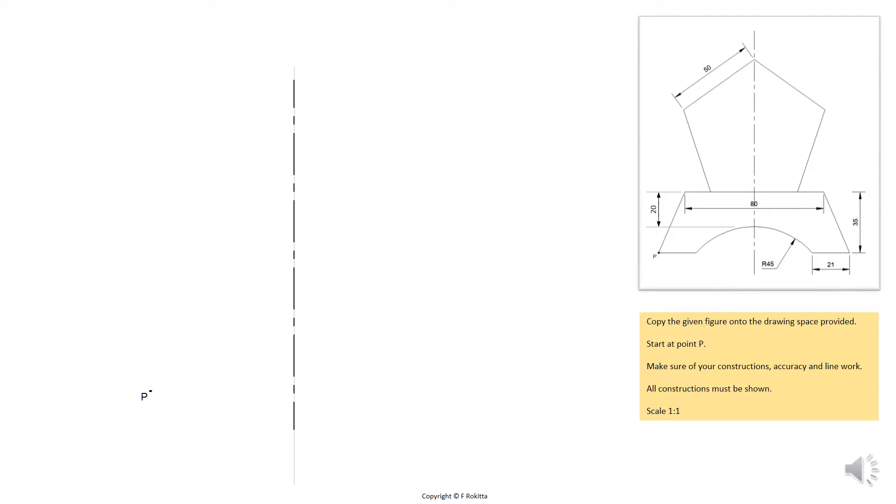Let's read the question. Copy the given figure onto the drawing space provided. Start at point P. Make sure of your constructions, accuracy and line work. All constructions must be shown and draw to a scale of 1 to 1.